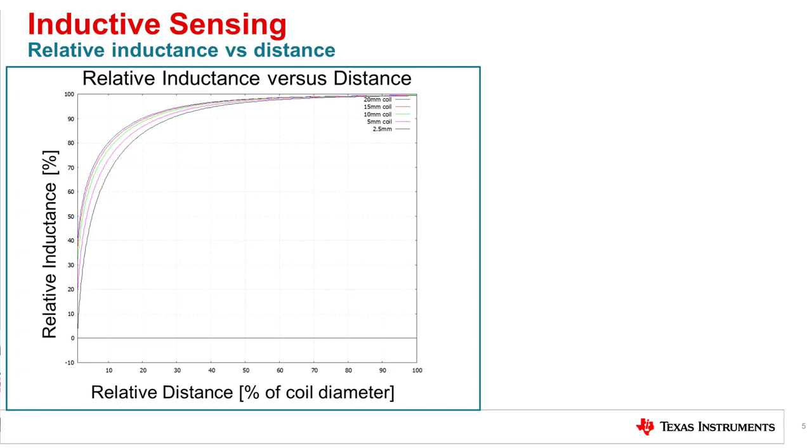This graph shows the relative inductance as a factor of the relative distance of the metal target as a function of coil diameter. As can be seen from the graph, different sizes of coils all exhibit the same general behavior as a function of percentage target distance from the coil. The left corner of this graph is the most sensitive. Smaller shifts in distance equate to higher shifts in inductance. Thus, the closer the target is to the coil, the better sensitivity and resolution.